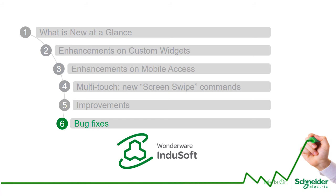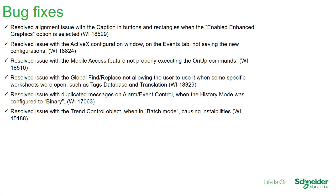Among the bug fixes: we resolved an alignment issue on the caption; we resolved an issue with the ActiveX configuration window that was not saving events; we resolved an issue with mobile access that was executing the on-up command twice sometimes; on the new global find and replace we found and fixed some issues depending on the screen that was open; we resolved an issue with duplicated messages on the alarm control event when using binary mode; and on the trend control object when using batch mode it was unstable and not working properly, so we fixed that as well.